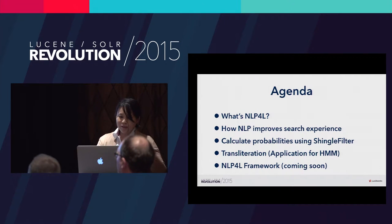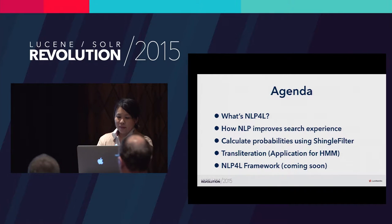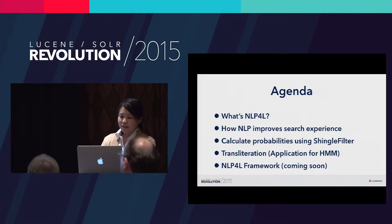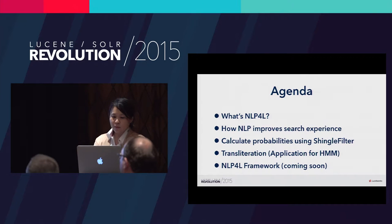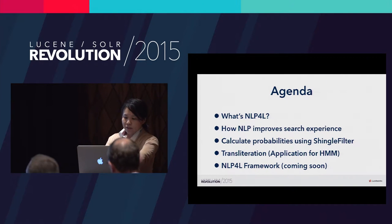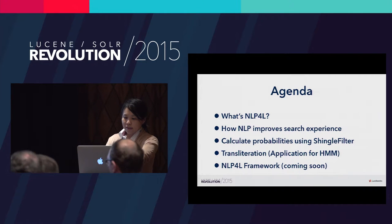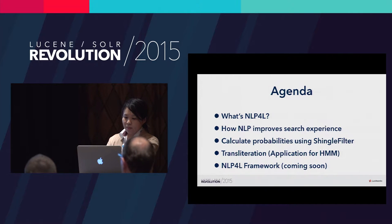This is the outline of my talk. First, I'll briefly go over NLP4L. Then I'll explain how NLP techniques can improve users' search experience. Then I'll introduce interesting usages of Shingling filter, use it to calculate probabilities of language model and the hidden Markov model, and introduce a transliteration program as an HMM application. At the end, I'll introduce the NLP4L framework which is under development right now.